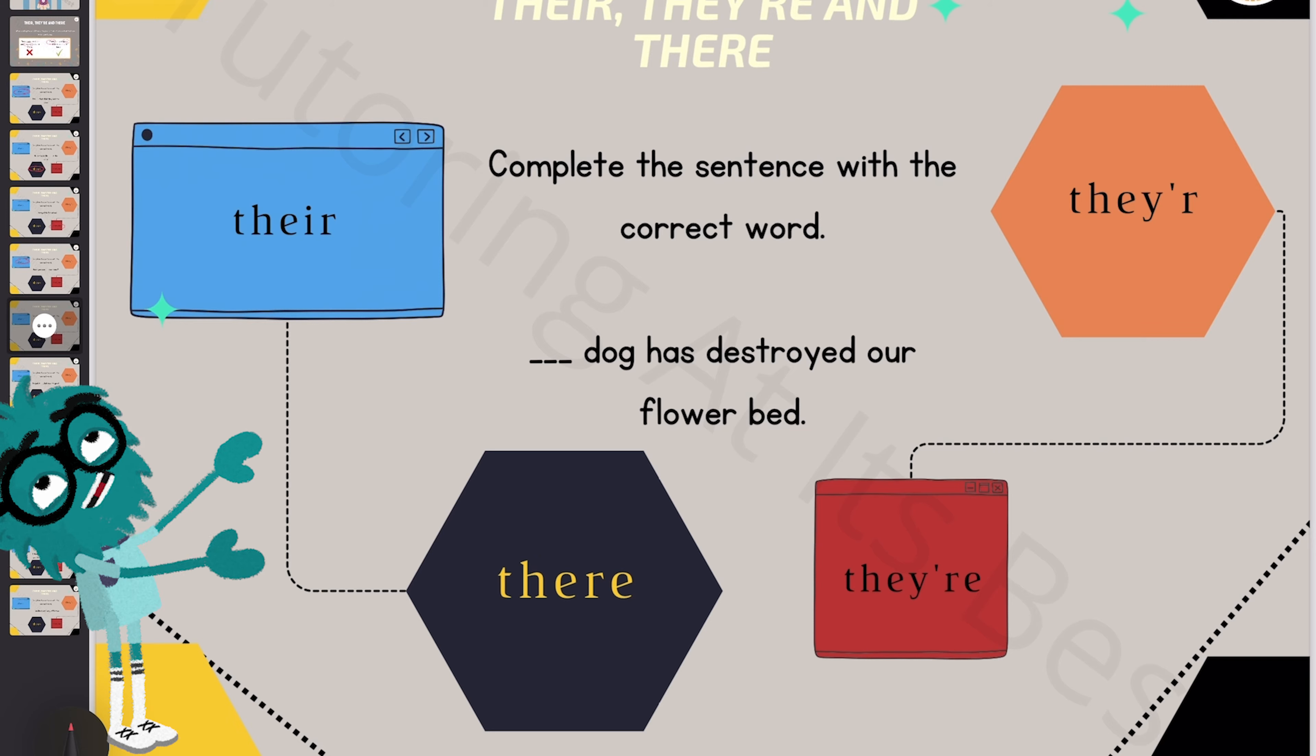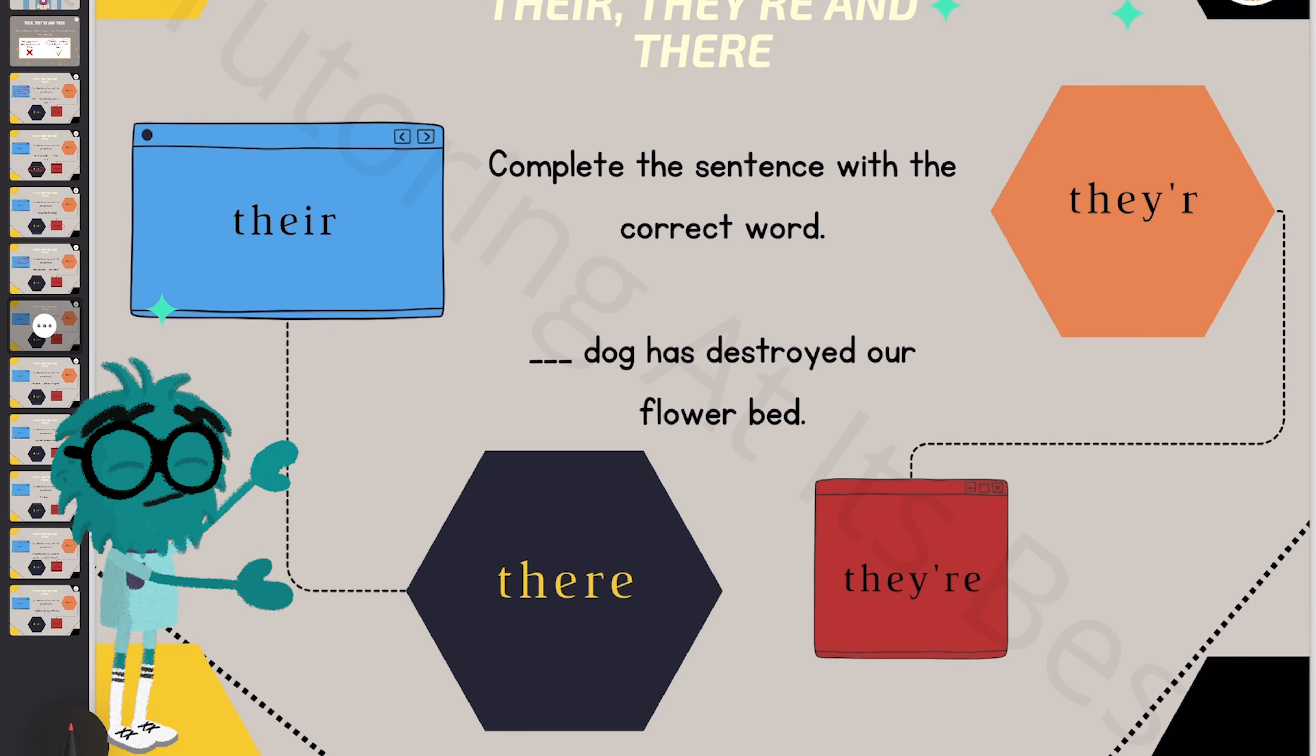And once again, their dog has destroyed our flower bed. So it's somebody's dog, so it's again a possessive adjective. So we go for their.